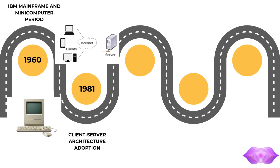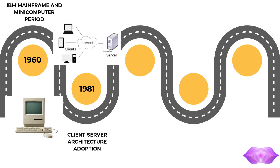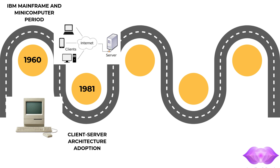During the early 1980s, a new form of distributed computing called the client-server model was widely adopted. It introduced distributed computing where servers provide resources and services to client devices over a network. The key feature is the separation of tasks between clients and servers, enabling applications such as file sharing, email, and databases. Popularized by technologies like Novell's Netware and Microsoft's Windows Server, this architecture improved scalability and efficiency, becoming the backbone of enterprise IT systems.